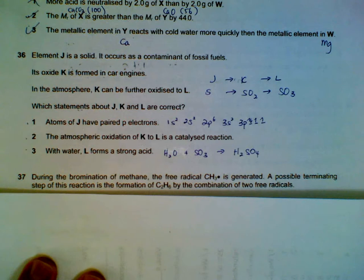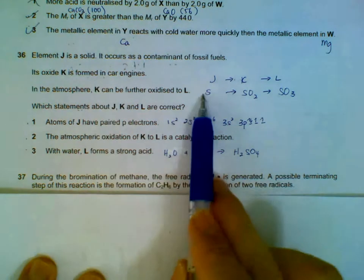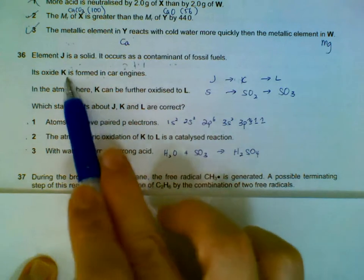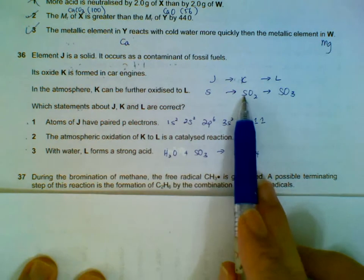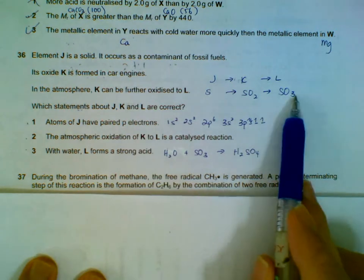Element J is a solid contaminant of fossil fuels. So J is actually your sulfur. It forms sulfur dioxide, which is K, and then under catalyst it can actually go to sulfur trioxide, which is L.